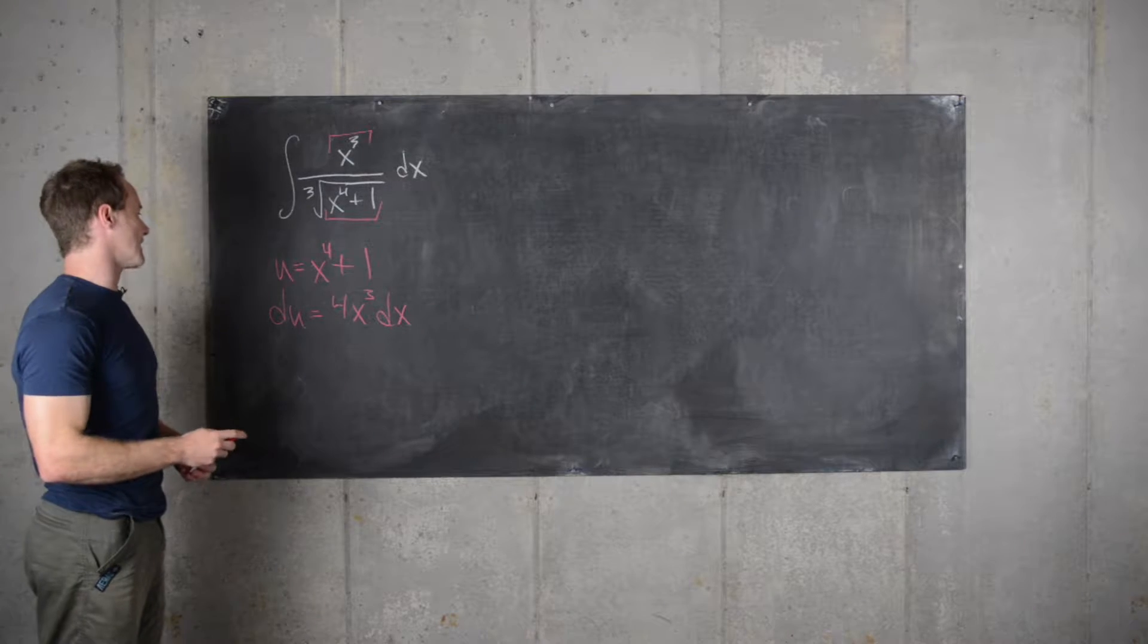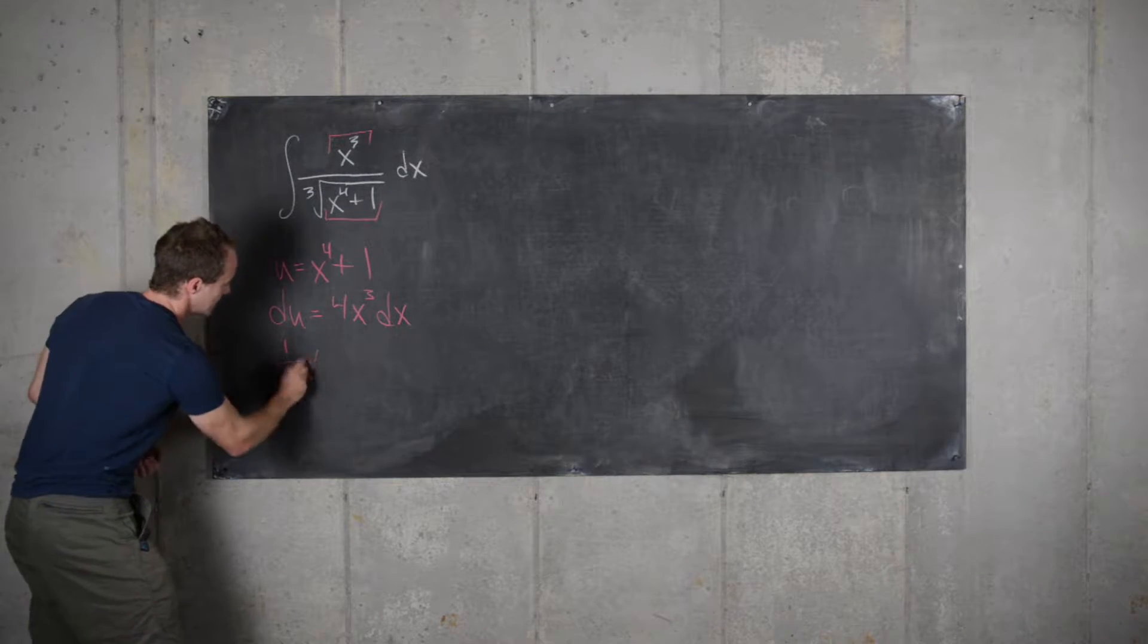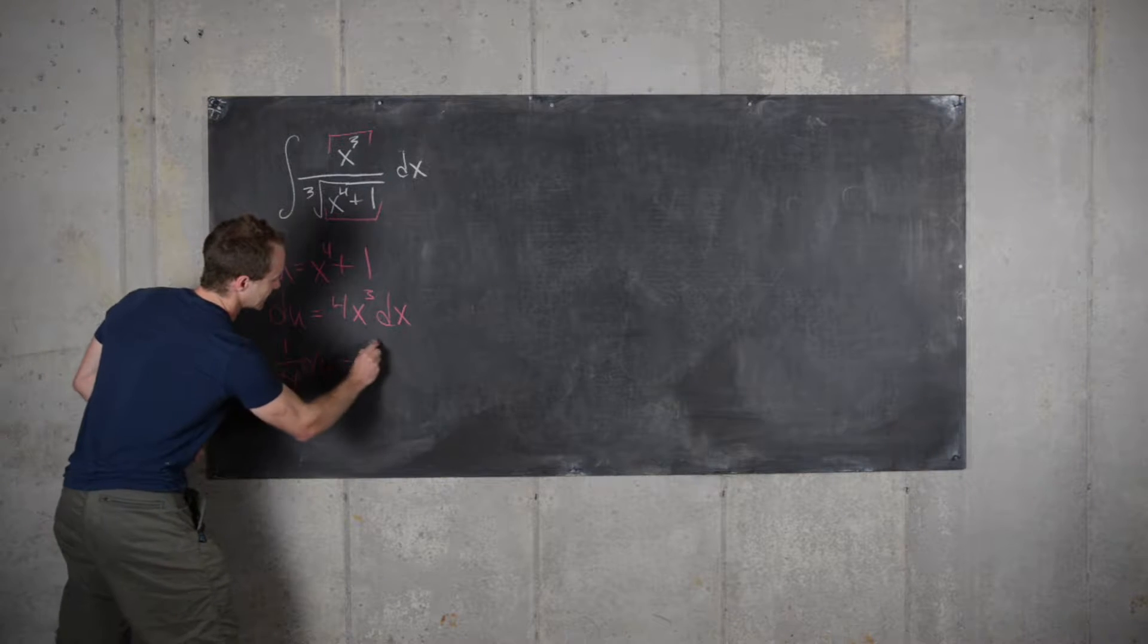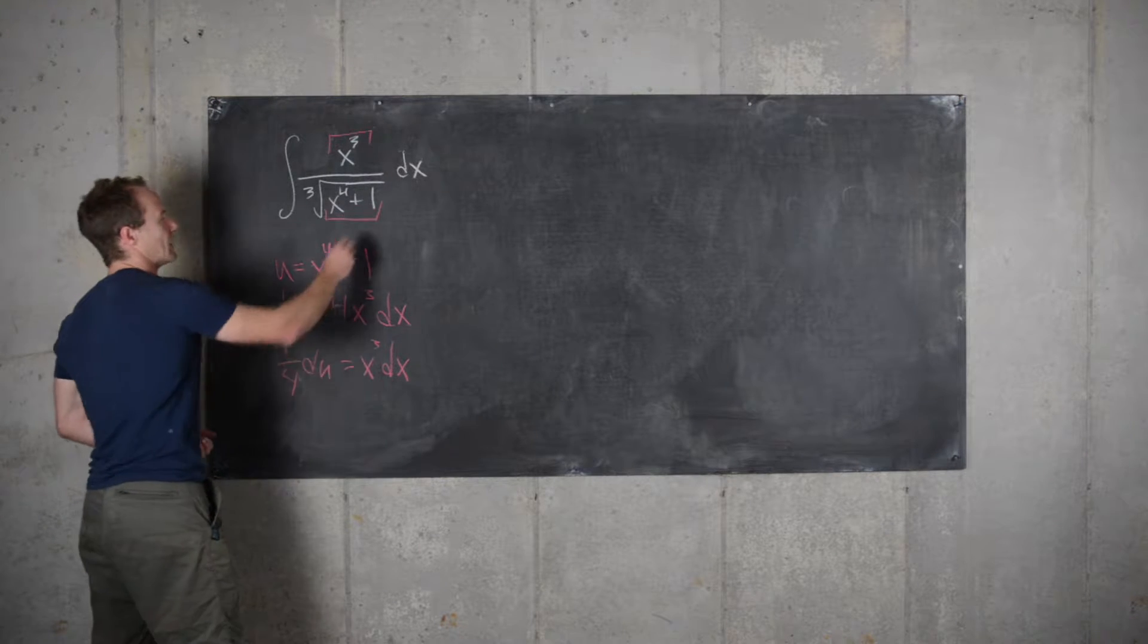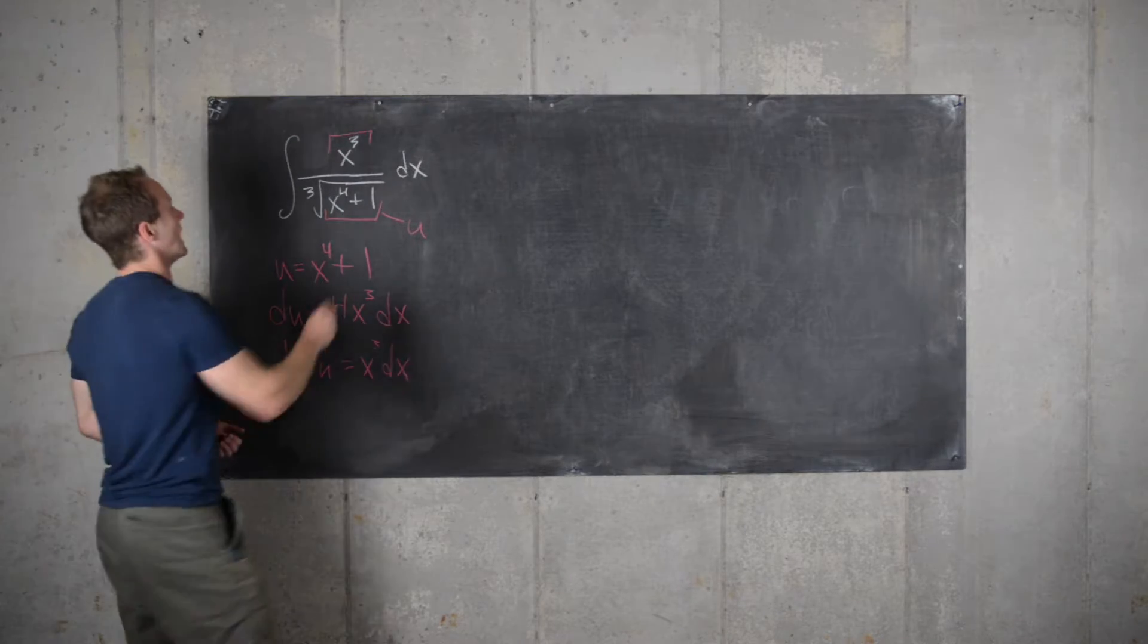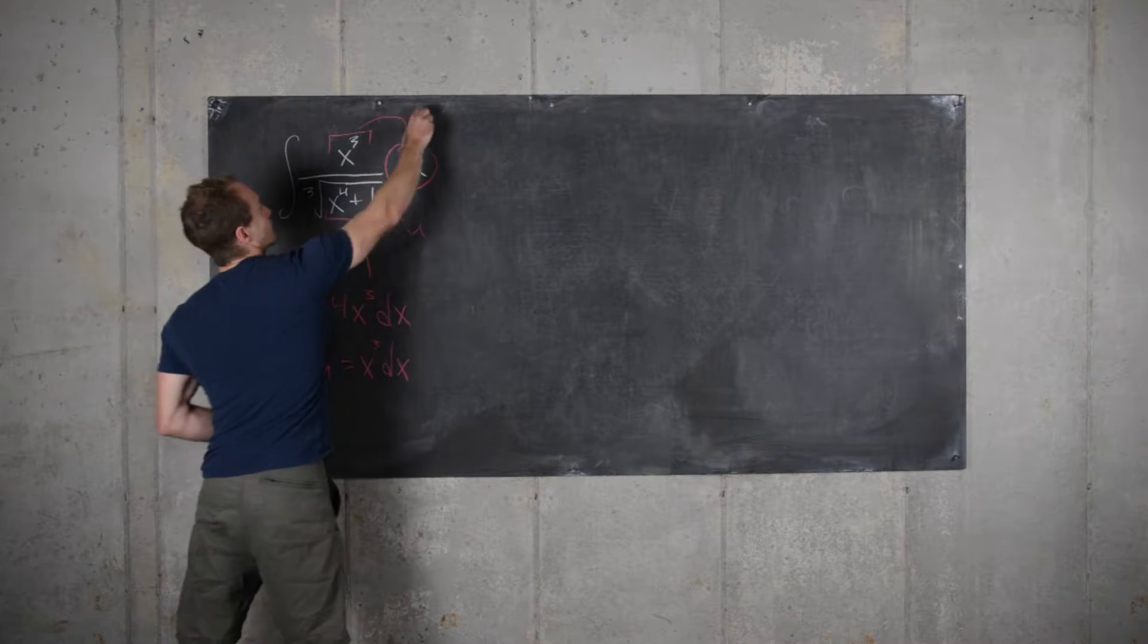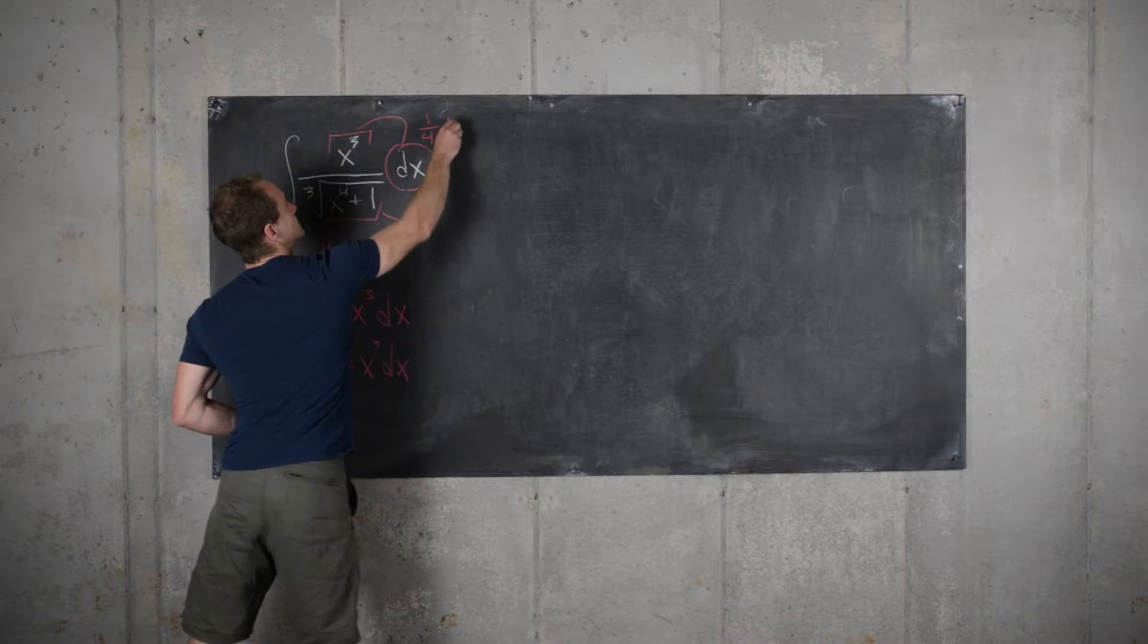And that doesn't quite fill out the whole integral, but if we solve, we get 1 quarter du equals x cubed dx. And now we see that this bit we can replace with u, and this numerator, along with the dx term, we can replace with 1 quarter du.